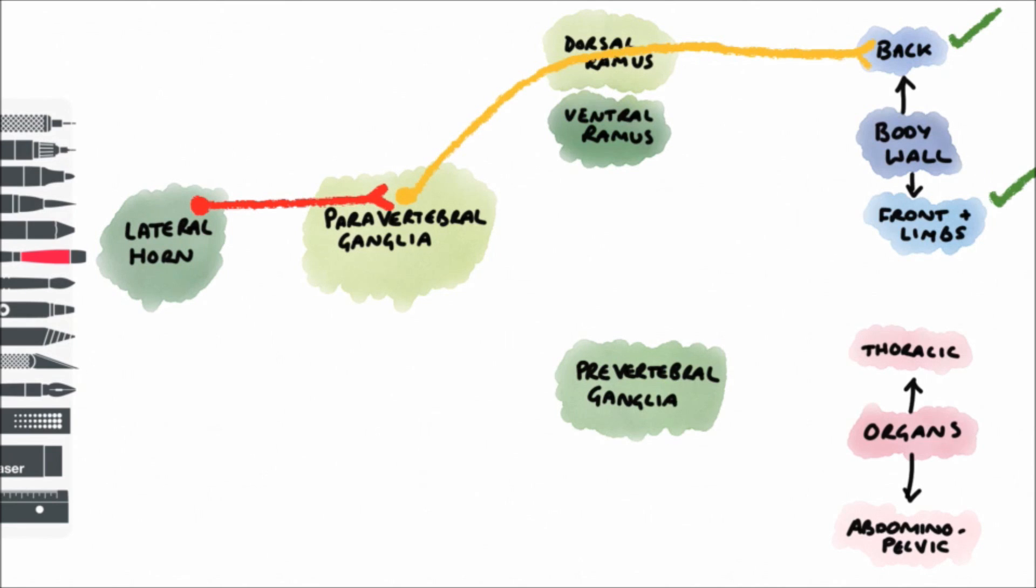In order to get to the front of the body, or to the limbs, so the skin of the belly button or the big toe, we start at the lateral horn, synapse in the paravertebral ganglia, and then again the postganglionic fibers back from the spinal nerve into the ventral ramus, and then to the body.